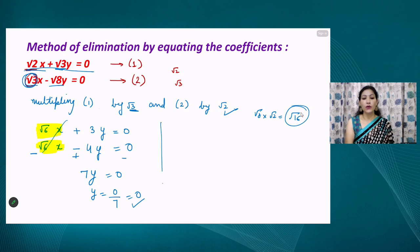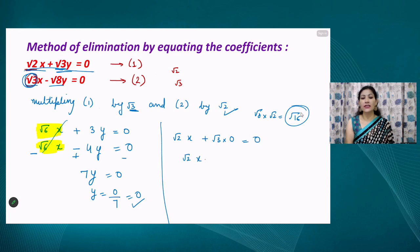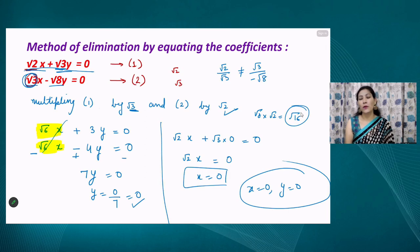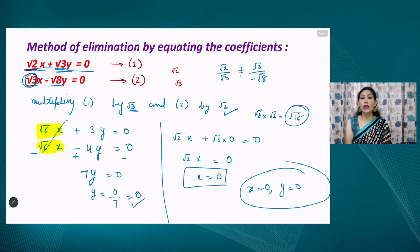With y = 0, substituting into equation number 1: √2x + √3 × 0 = 0, which gives √2x = 0, so x = 0. The solution for both equations is x = 0 and y = 0. We can verify this: since a₁/a₂ ≠ b₁/b₂, when a₁/a₂ and b₁/b₂ are not equal, the system has a unique solution.